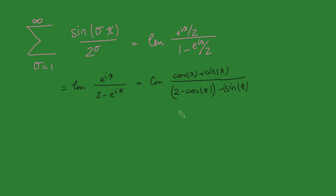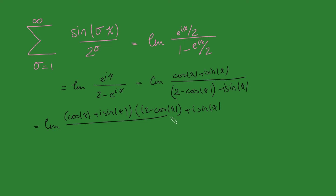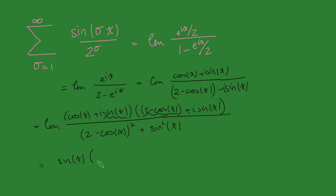Multiplying top and bottom by the conjugate, on the top we get cos x plus i sine x, multiplied by the conjugate of the bottom, which is 2 minus cos x plus i sine x. On the bottom we get 2 minus cos x, quantity squared, plus sine squared x. Now expanding the top, focusing on the imaginary part: I get sine x times 2 minus cos x, plus cos x times sine x.